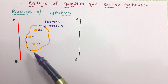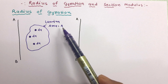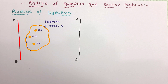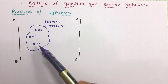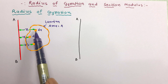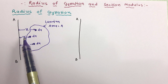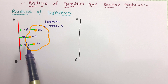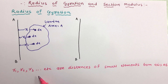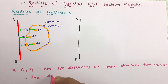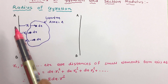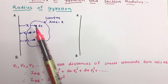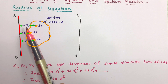Here is one lamina given which has total area A. This is the reference axis. Now it is assumed that this lamina is made up of a number of small elemental areas DA. The distance of all these small elements from the reference axis is R1, R2, R3 respectively. So R1, R2, R3 are the distances of the small elements from axis AB. So moment of inertia, or we can say second moment of area of this lamina about AB axis, will be equal to area into distance into distance of all elements.